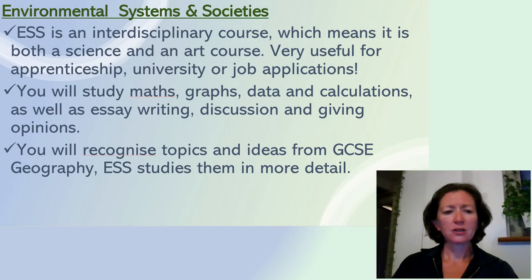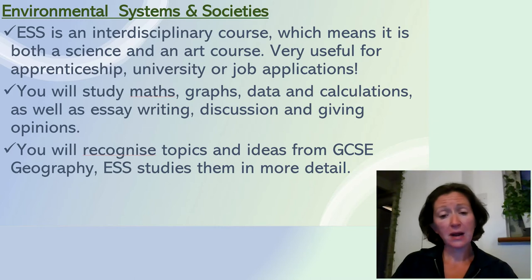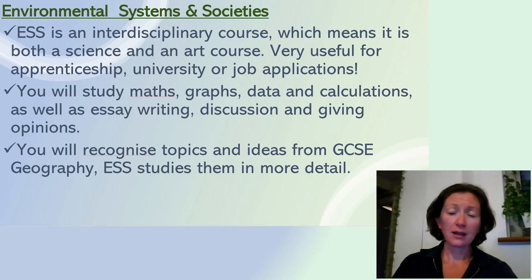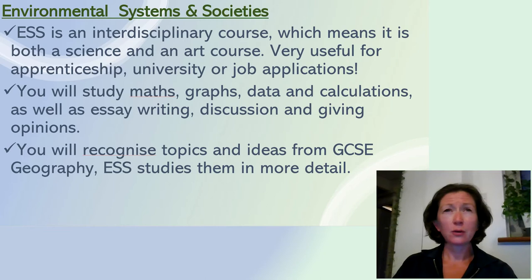One of the really nice things about Environmental Systems and Societies is that it's an interdisciplinary course, meaning it's considered both a science-based subject and an arts-based subject. This is really useful if you're applying for an apprenticeship, a university place, or a job at the end of sixth form, because without having to study biology, chemistry, or physics, you're still considered to have studied a science at sixth form level. The course has some scientific parts — maths, graph creation, data analysis and calculations — but there's also more of an arts side, like writing essays or having discussions and giving your opinion about an idea or a theory.